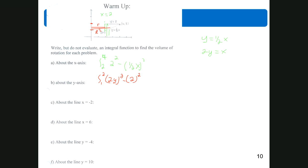For rotation about the vertical line x equals negative 2, we're not rotating around an axis anymore. My small radius just gets 2 added on, so it becomes 2 plus 2 equals 4. Likewise, the large radius becomes 2y plus 2. So the integral from 1 to 2 is (2y + 2)² minus 2² — or just 4 squared, it doesn't matter.